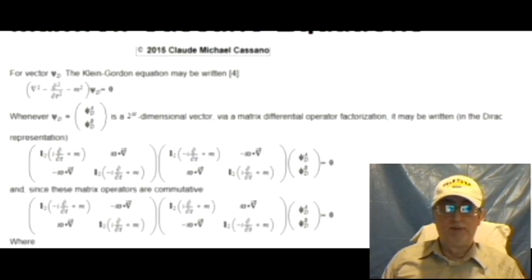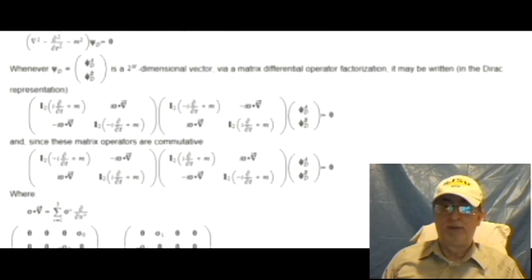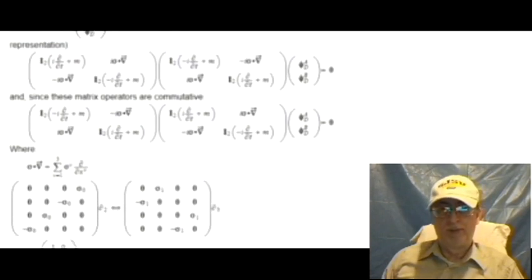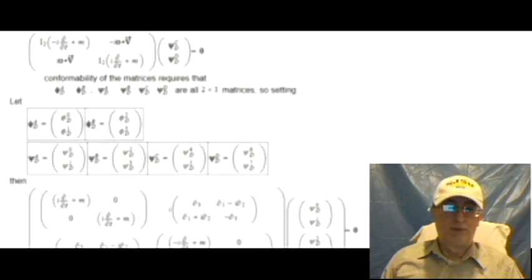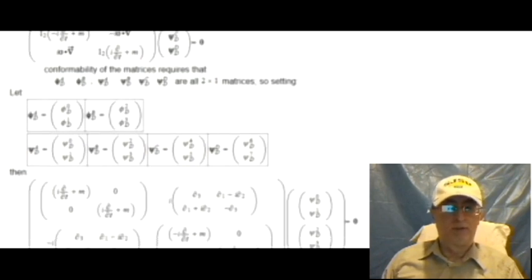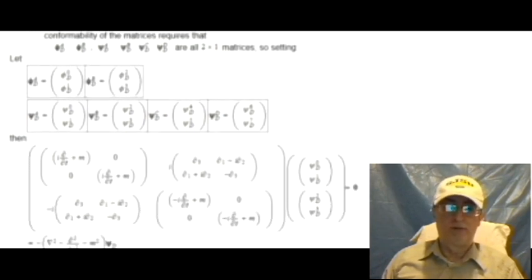It may be written in the Dirac representation as shown here. Since these matrix operators are commutative, conformability of the matrices requires that these matrices are all 2-by-1 matrices.